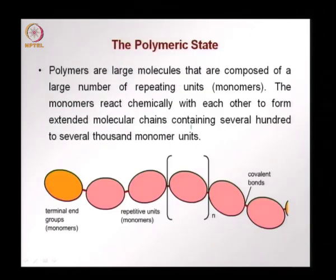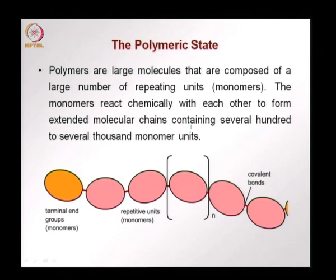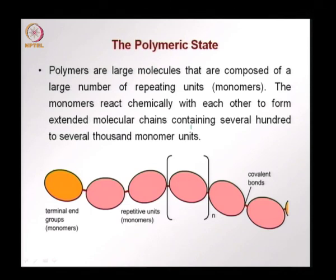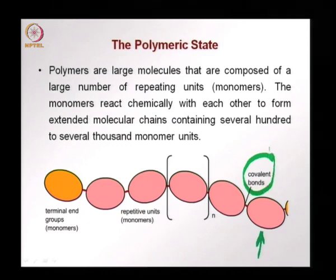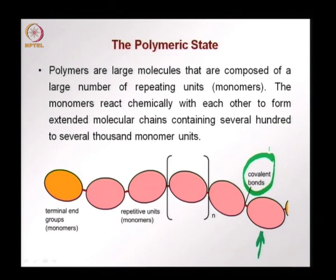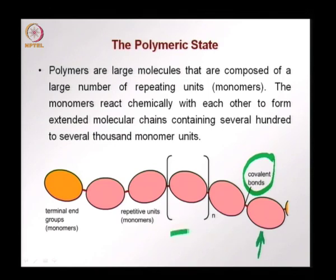Moving on to a different type of material — the polymer. Polymers are large chain molecules made out of several repeating units called monomers. Each monomer unit joins together to form a polymer. The monomers react chemically with each other, forming covalent bonds which develop between the particles and form molecular chains that can have several hundred to several thousand monomer units. It is a repeating unit of this type that keeps carbon atoms reoccurring through the polymer chain.